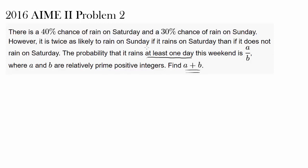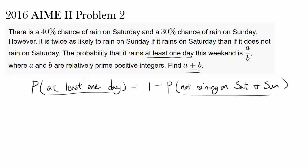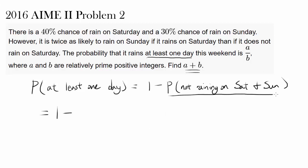So how can we approach this? We wish to find the probability of it raining at least one day. It seems like it's going to be pretty tough to find the probability of raining just on Saturday, just on Sunday, or both days and adding them up. So let's just use the complement: one minus the probability of not raining at all — not raining on Saturday and Sunday — because these two things are mutually exclusive and exhaustive, meaning they cannot both occur, and only one can occur. So adding them up gives probability one, and subtracting from one gives the probability of at least one day. We wish to find one minus the probability of not raining on Saturday and Sunday.